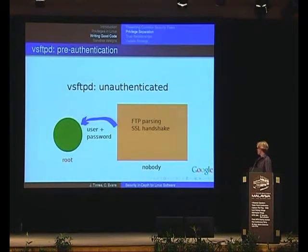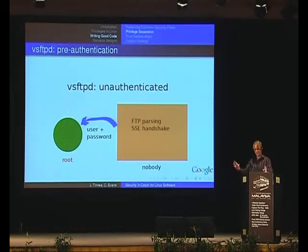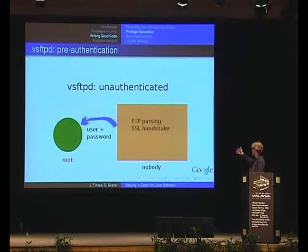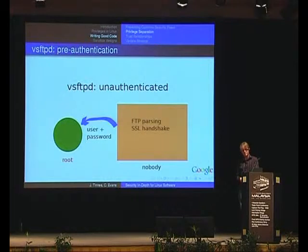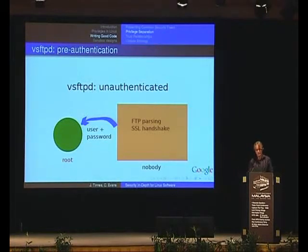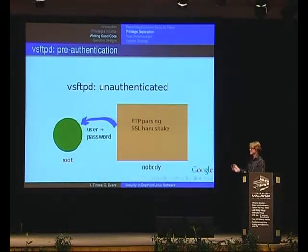This is what things look like in terms of processes when you are not yet authenticated to VSFTPD. You've got two processes. On the right is the untrusted process running as nobody — some user ID that doesn't own anything sensitive. In there happens all the risky things: FTP parsing and mainly the SSL handshake. Once this untrusted end has a proposed username and password, it sends them to the trusted end running as root, which has the authority — if the credentials are correct — to kill the right-side process and spawn a new process running as the correct user. The root process on the left is as small as possible with a minimal interface: all it does is accept a username and password and check them.